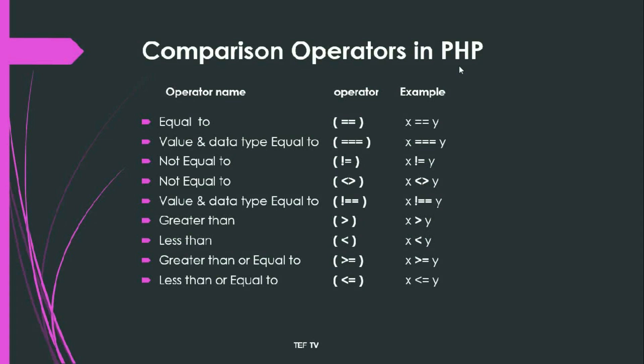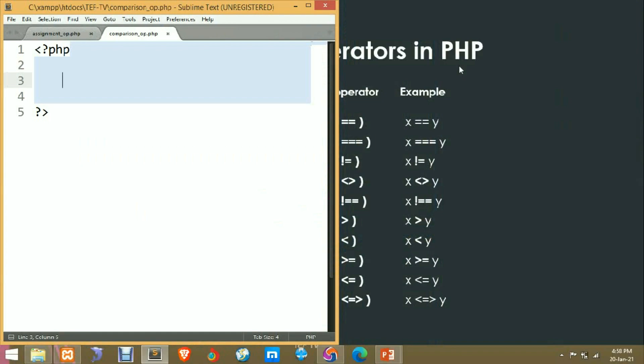Then we have the spaceship operator (<=>), which is used in PHP 7. This can be used to compare the values of two variables — you can check whether x is less than, equal to, or greater than y. When the value of x is less than y, it will print minus one. When the value of x equals to y, it will generate zero. When the value of x is greater than y, it prints positive one.